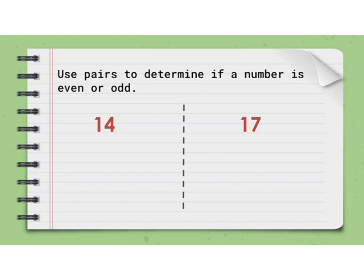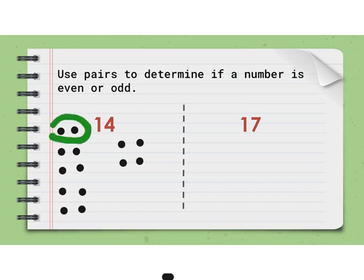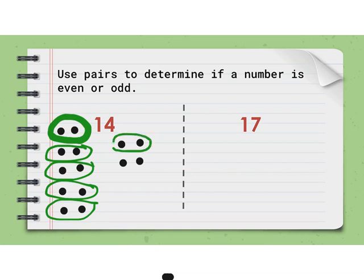If I take the number 14 and I make pairs until I get to 14, I can tell if 14 is an even or odd number. So here's one pair — I count: 1, 2, 3, 4, 5, 6, 7, 8, 9, 10, 11, 12, 13, 14. Now if I take my pencil and I circle all my groups of two, there's one, there's one, there's one, there's one — all of these can be pairs. They all fit into pairs, so I made equal groups of two and 14 would be an even number.